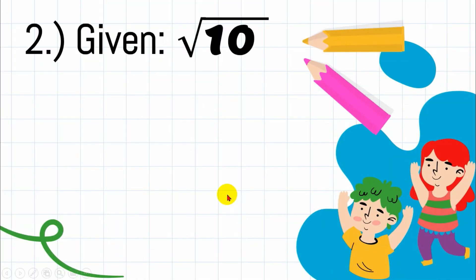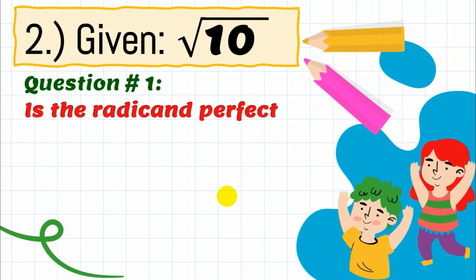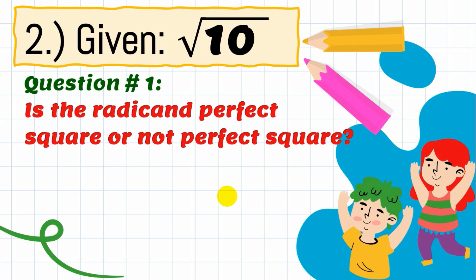For number two, given the square root of 10, let's answer question number one. We are going to differentiate and describe the differences between illustrative example number one that I presented a while ago and this example. Question number one is: is the radicand a perfect square or not a perfect square?